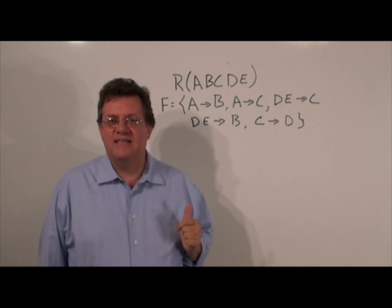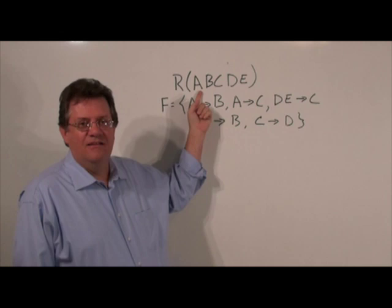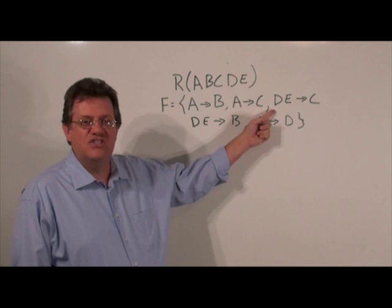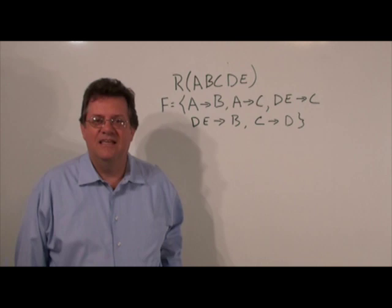On the board behind me you see an example of a relational schema R(A, B, C, D, E), so it has five attributes. And we see a set of functional dependencies: A determines B, A determines C, DE determines C, DE determines B, and C determines D.